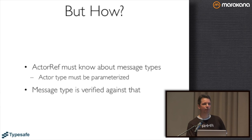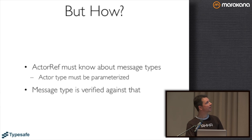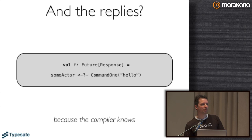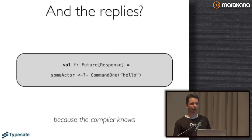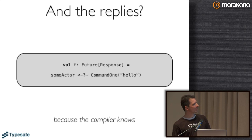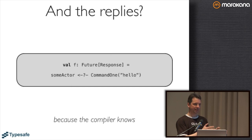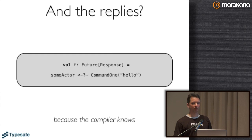In Akka we have something else - every message sent is accompanied by the sender reference, so there can be replies. And these replies, it would be really nice if they could also be typed. So I imagine we have the ask operation - I have the question mark in this arrow to signify this. Normally you would get back a future of Any because the compiler does not know better what the actor might actually reply. But in this case we have the knowledge as a programmer. We write this actor - when it gets a command it gives you back a response. So it should be a future of Response and not of Any.